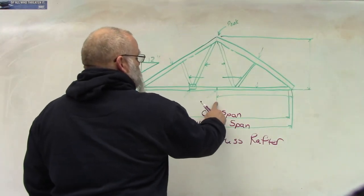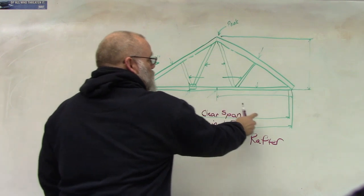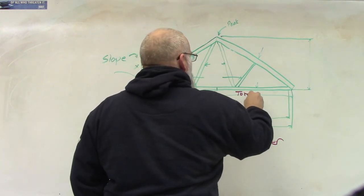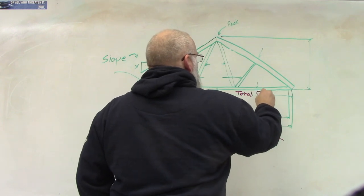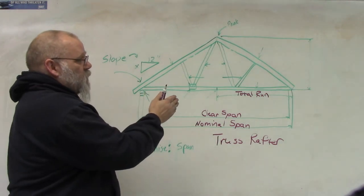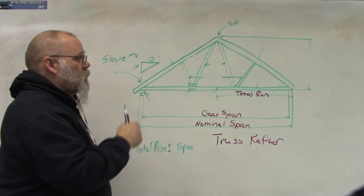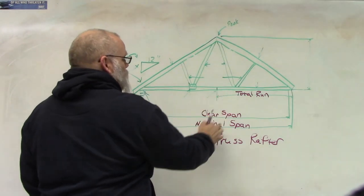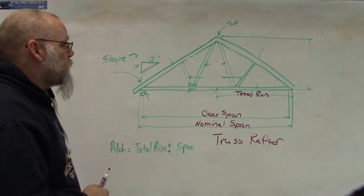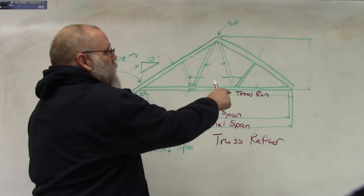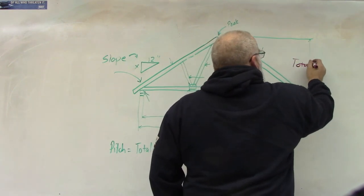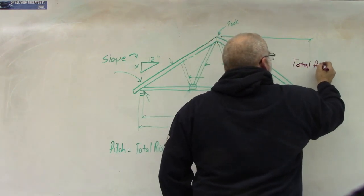Moving up here — the distance from the exact center of the rafter to the outer edge of the wall is called total run. From the exact center of the rafter to the outside of the wall is the total run. Now the total run is going to be half of the nominal span. Over here on the right, the total distance up is called the total rise.